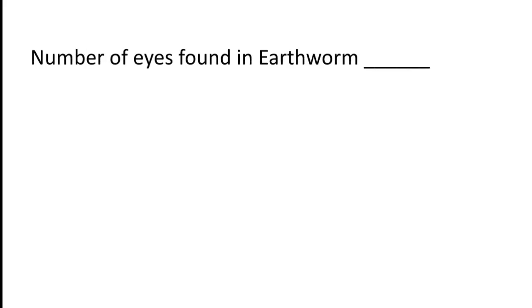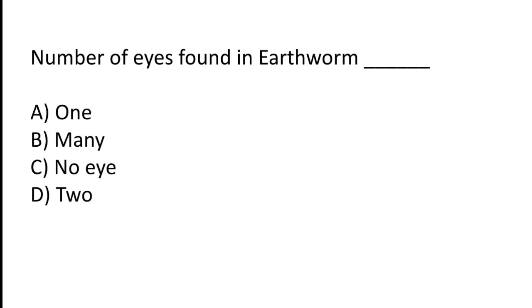The number of eyes found in earthworm is: 1, many, no eye, or 2? The correct answer is option C — earthworms have no eyes.